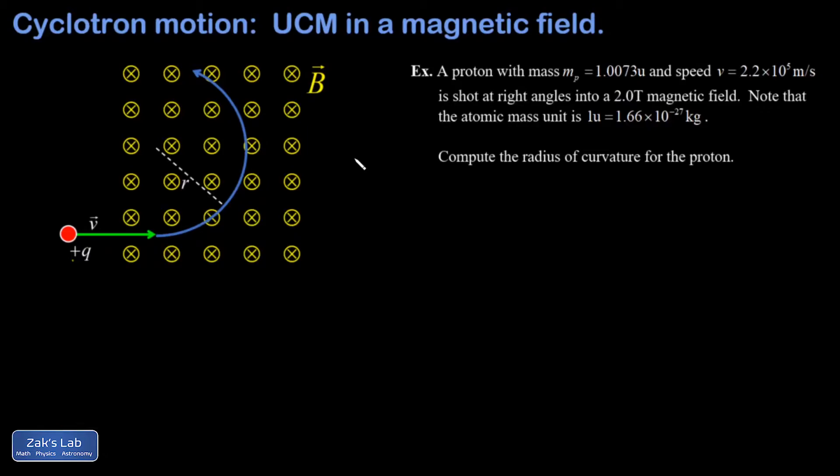I want to work things out qualitatively real quick, so let's look at the particle after it's gone into the magnetic field. At this moment, I still have a rightward velocity and this inward magnetic field.